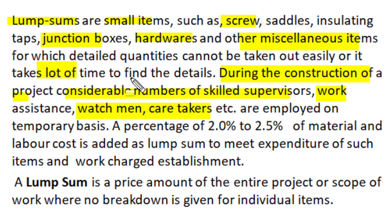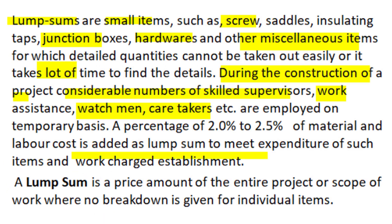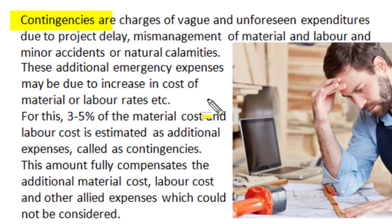For lump sum items and work charge establishments, a certain percentage of 2 to 2.5 percent of material and labor cost is added as a lump sum to meet expenditure of such small petty items or work charge establishments. A lump sum is a price amount for the entire project or the scope of electrical installation work where no breakdown is given for individual components of expenditure, and a one-time cost is calculated for all such activities.